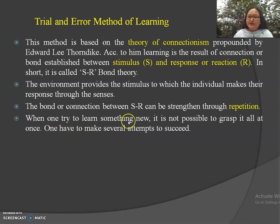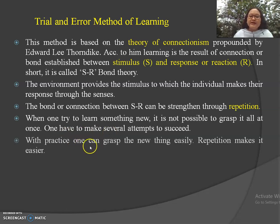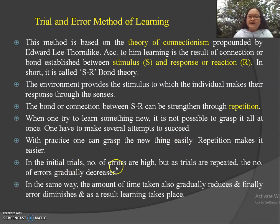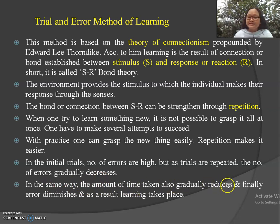When one tries to learn something new, it is not possible to grasp it all at once. One has to make several attempts to succeed. With practice, one can grasp the new thing easily, so repetition makes it easier. In the initial trials, number of errors are high, but as trials are repeated, the number of errors gradually decreases. The amount of time taken also gradually reduces, and finally error diminishes and S-R learning takes place.